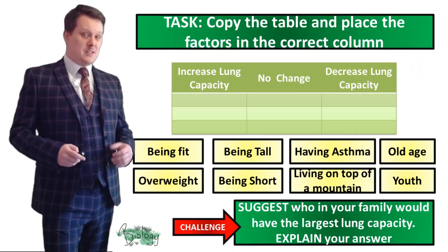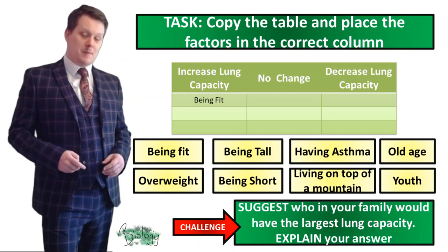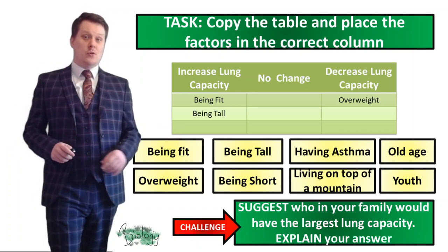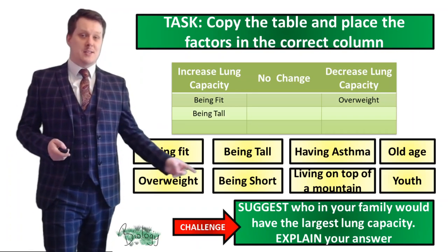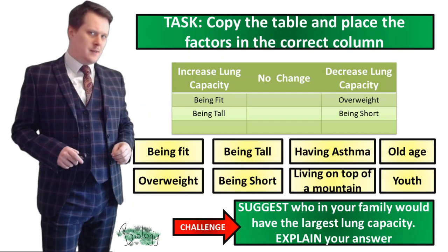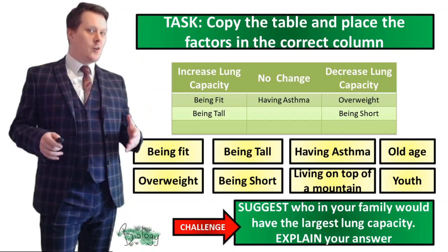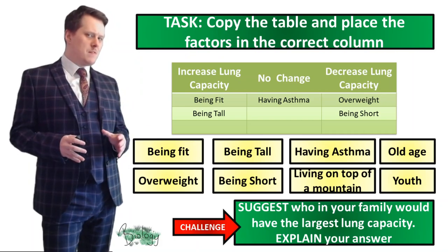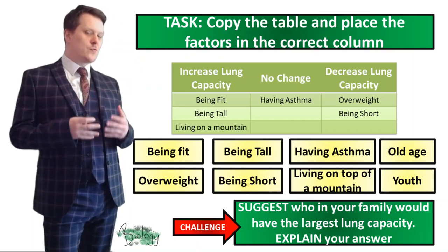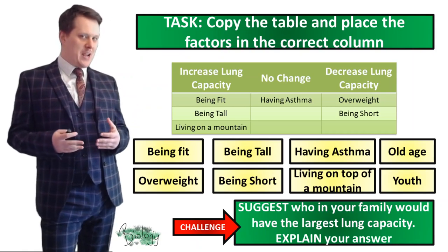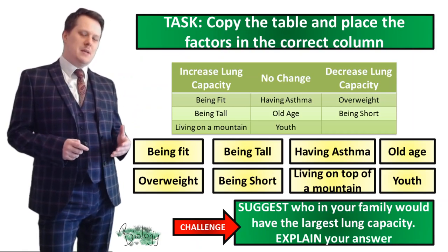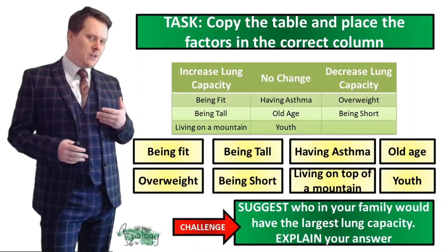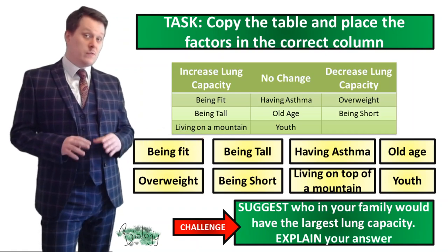Fitter people generally have larger lung capacities. Overweight people tend to have lower lung capacities. Taller people tend to have a larger lung capacity than shorter people. Having asthma doesn't affect lung capacity unless you're having an asthma attack, in which case it goes down. Living at high altitudes increases your lung capacity because of the change in pressure. Old age and being young have no effect on lung capacity — increases as you grow are more related to getting taller.